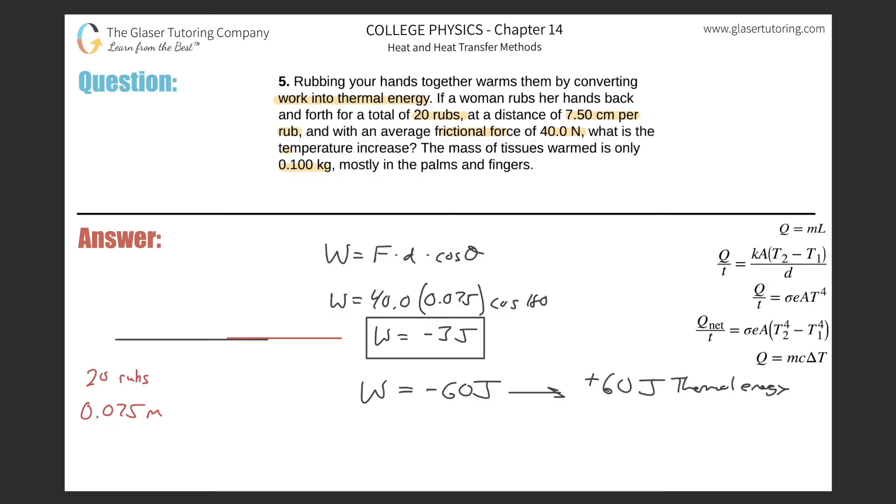Now the problem should be fairly straightforward. We want to find the change in temperature, so it might all be starting to click together. We write Q = mcΔT. They want to find the temperature increase, so really they're asking for the change in temperature. Divide out mc from both sides, so we would have Q over mass times the specific heat.